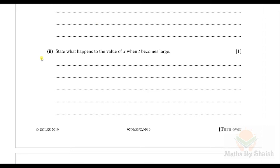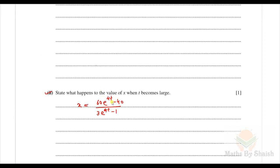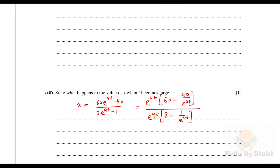For the next part, what happens to x as t becomes large? Taking e^(4t) as a common factor from numerator and denominator: x = [e^(4t)(60 − 40e^(−4t))] / [e^(4t)(3 − e^(−4t))]. The e^(4t) terms cancel. As t → ∞, e^(−4t) → 0, so x → 60/3 = 20.